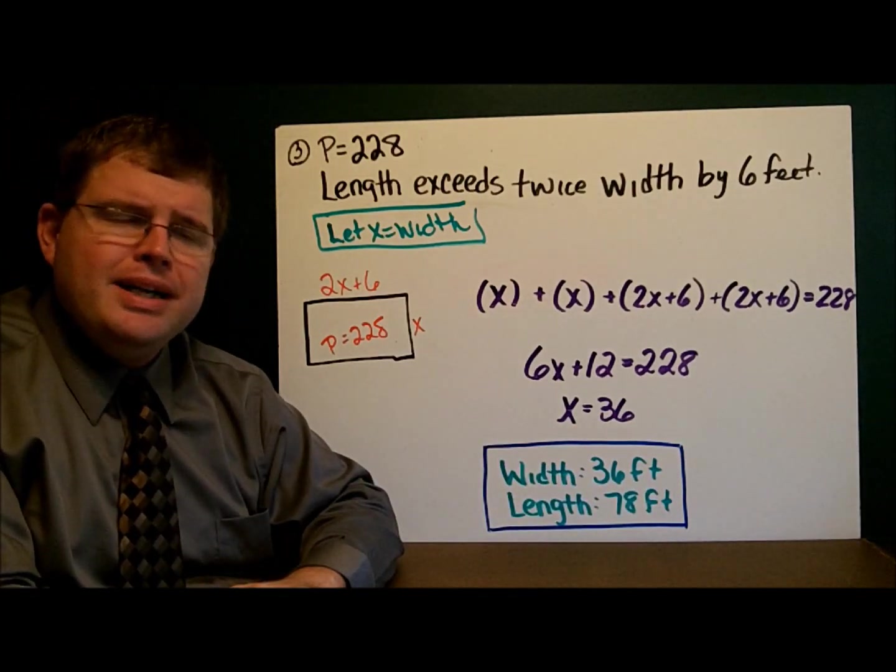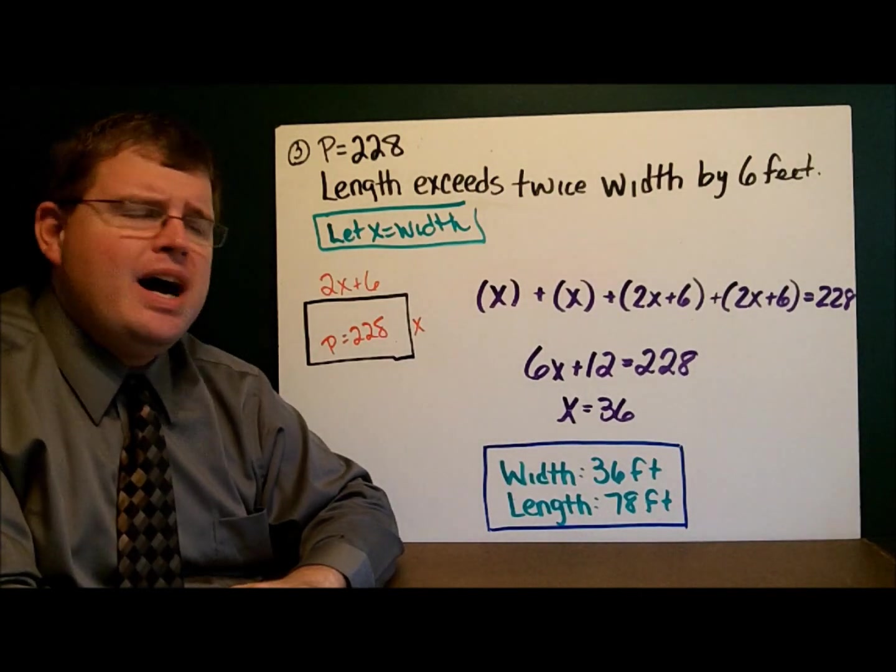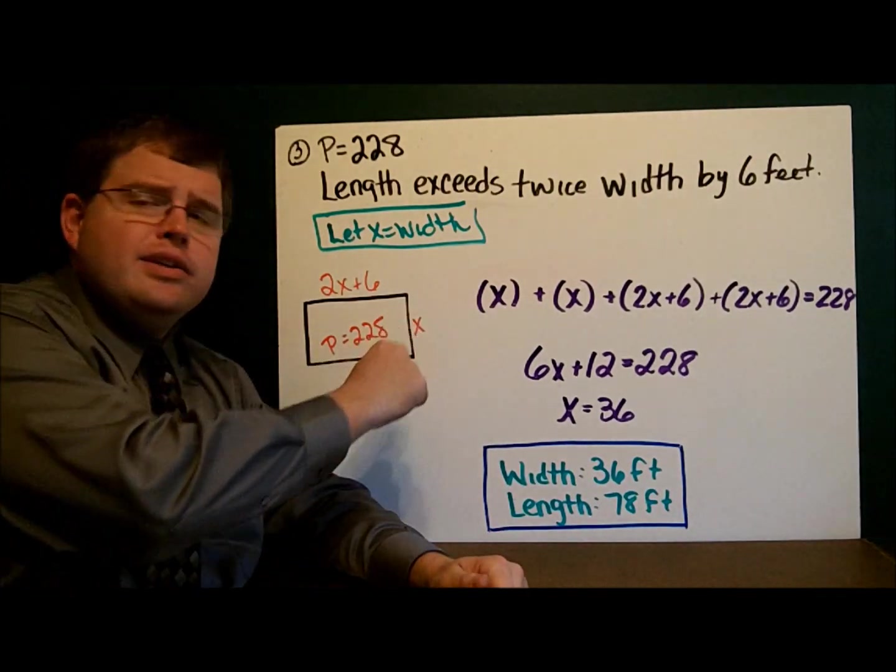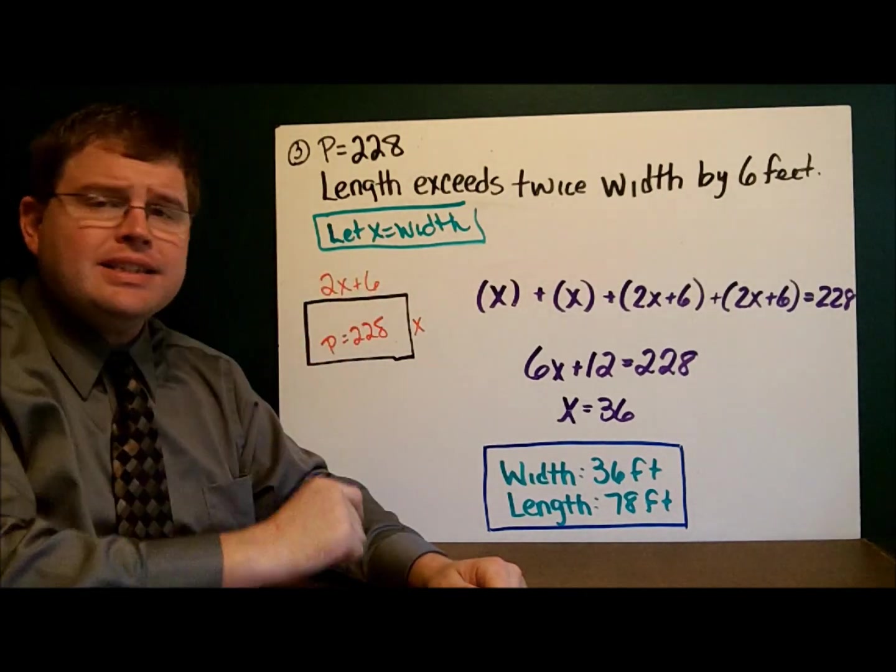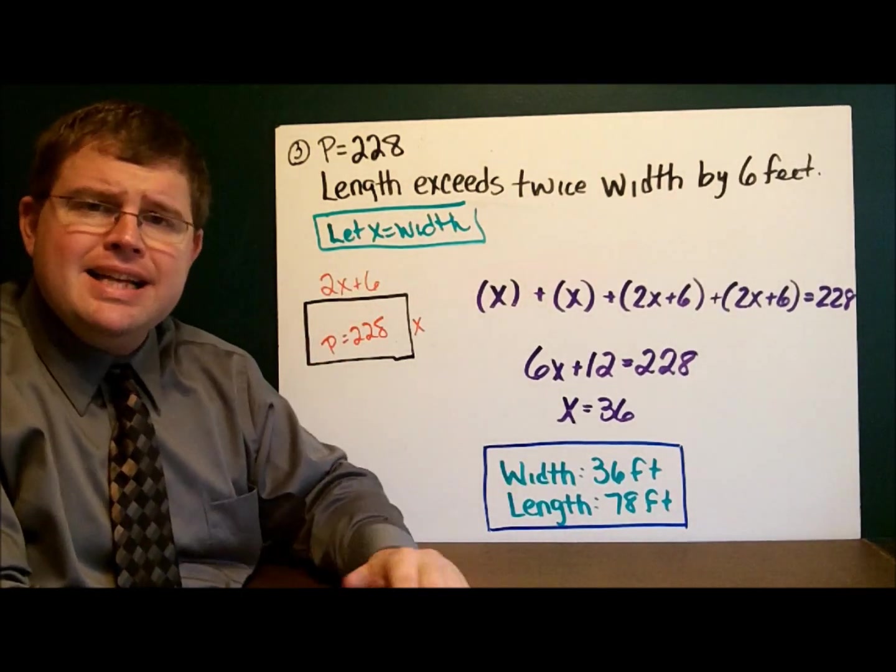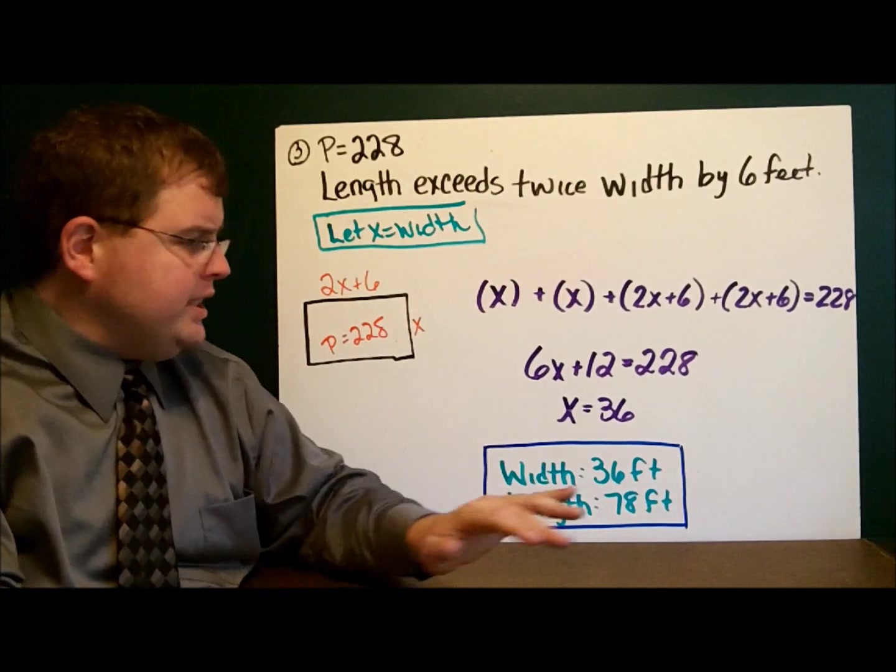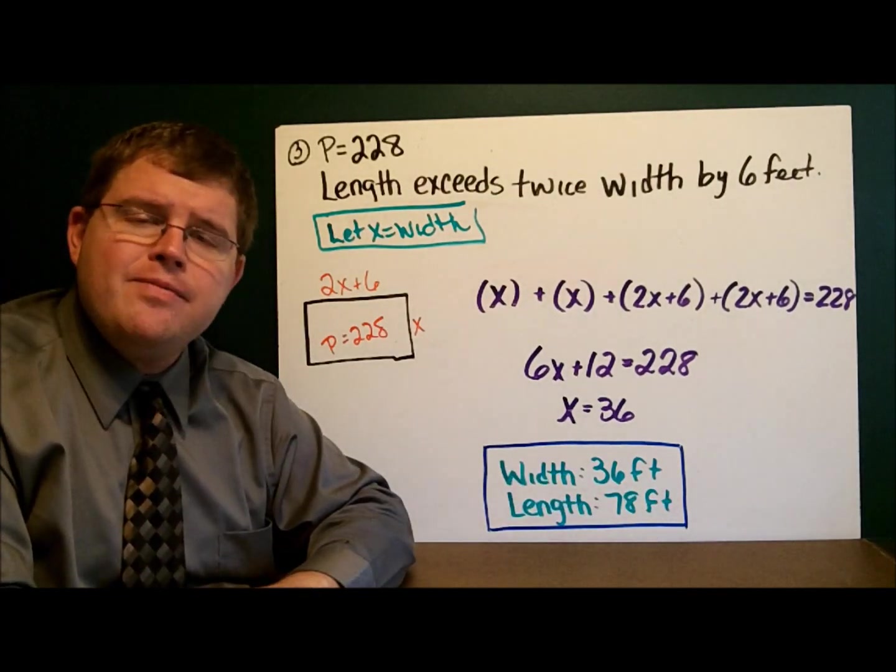That means the dimensions of the court are now easy to find. x is 36, so this side here is 36. This side here, 2 times 36 plus 6 is 78 feet. So the dimensions are 36 feet by 78 feet.